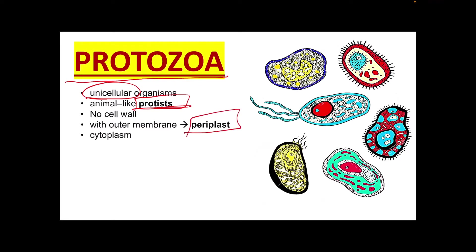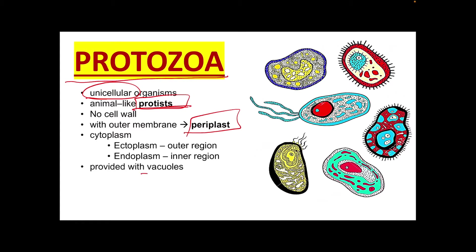Protozoa also have a cytoplasm containing the outer and inner region, which are the ectoplasm and endoplasm respectively, and they are provided with vacuoles. A vacuole is basically a water bubble within the endoplasm. The main function of this vacuole is to collect excretory waste, like ammonia, from the intracellular fluid by the process of diffusion and also active transport.